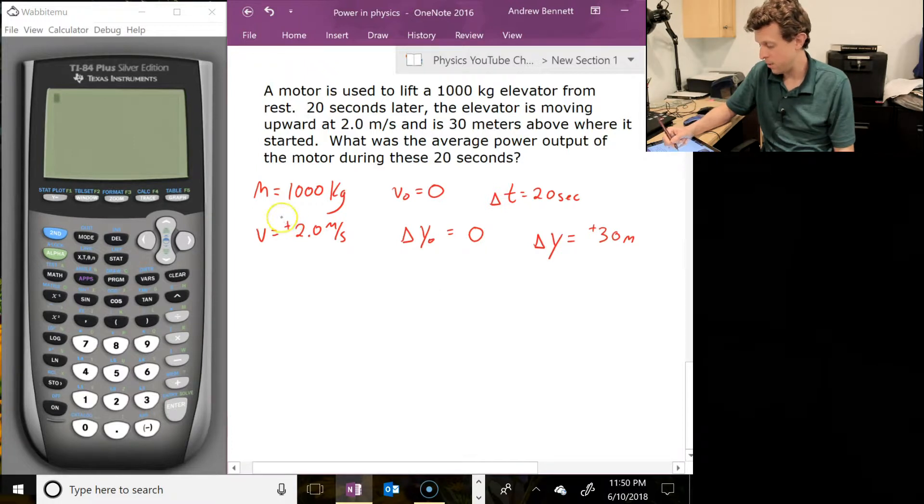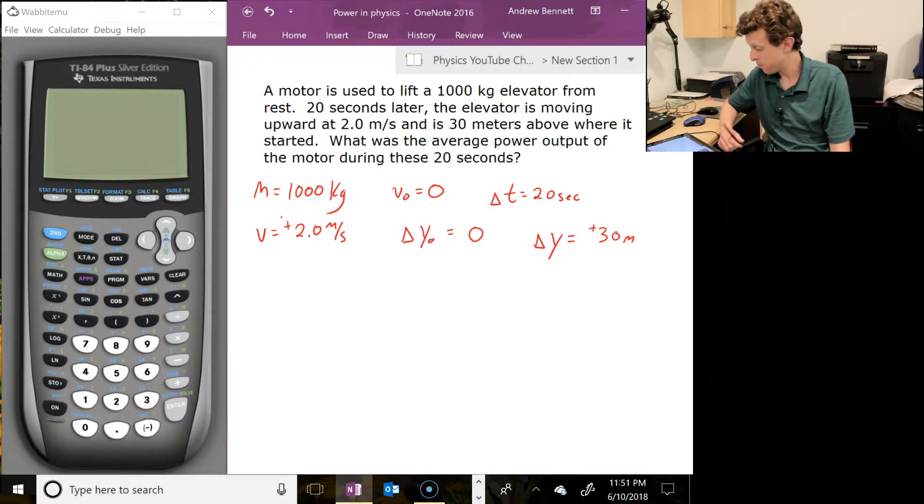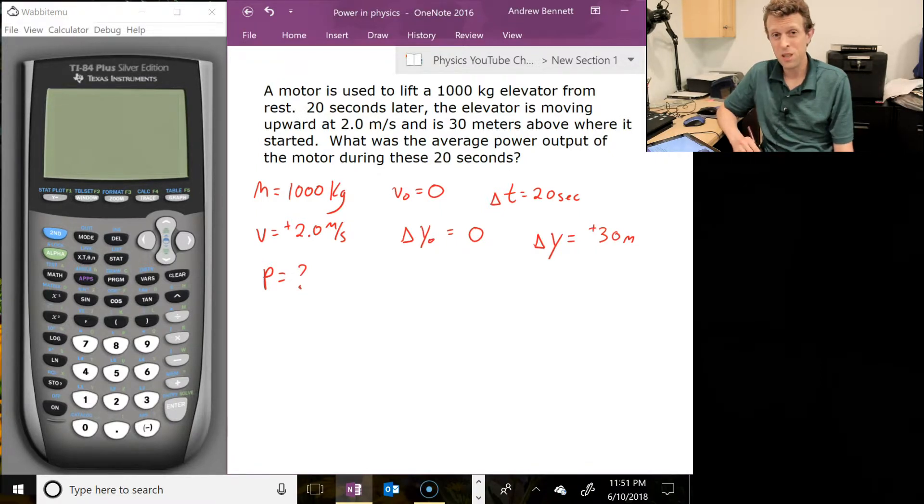All right, we've also got the speed is positive 2.0 meters per second. Upward, the velocity is upward. All we need here is speed, so it doesn't matter, but we've got the information. Why not write it down? And we are looking for the average power output. So that is a P equals question during those 20 seconds. Now, I see that we've got information about mass and speed and height here. That sounds like it's set up pretty well to do energy considerations. Mass and speed gets us kinetic energy. Mass and height and knowing gravity, that gets us potential energy, gravitational potential. So let's set it up that way.